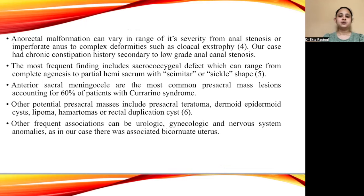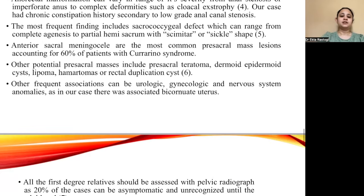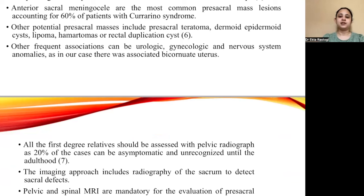The most frequent finding includes sacrococcygeal defect, which can range from complete agenesis to partial hemisacrum with a sickle shape. Anterior sacral meningoceles are the most common pre-sacral mass lesions, accounting for 60% of patients with this syndrome. Other potential pre-sacral masses include pre-sacral teratoma, dermoid and epidermoid cysts, lipoma, hematomas, or rectal duplication cysts. Other frequent associations include urologic, gynecological, and nervous system anomalies. In our case, there was an associated bicornuate uterus.